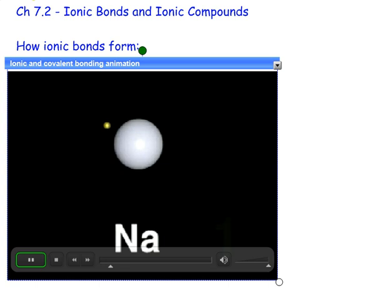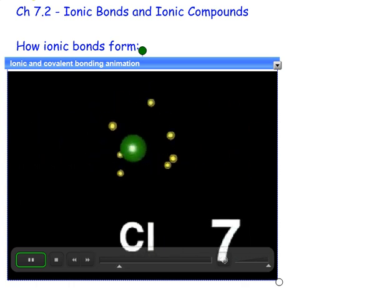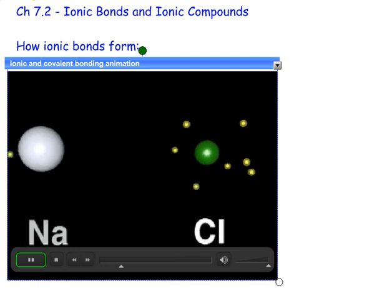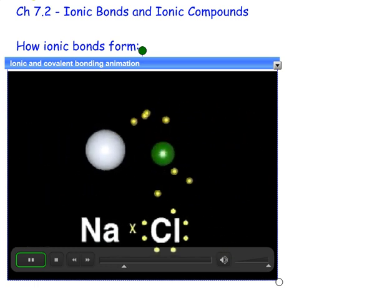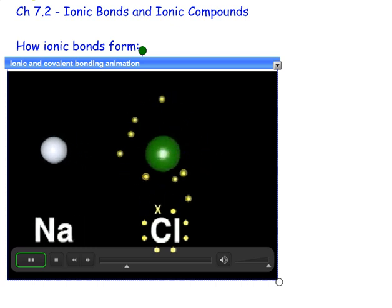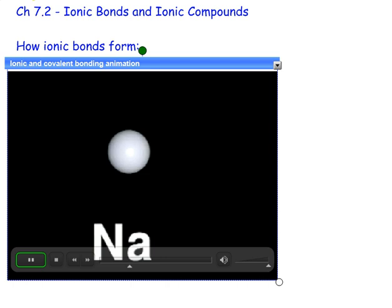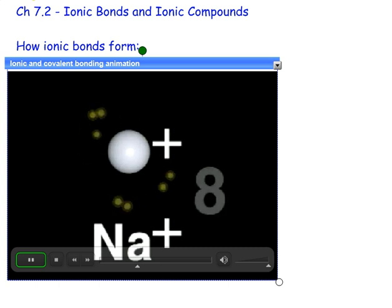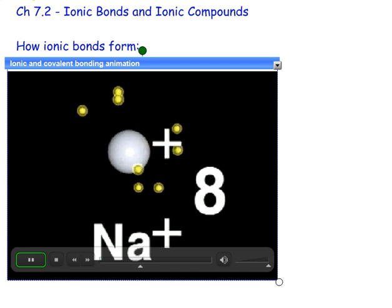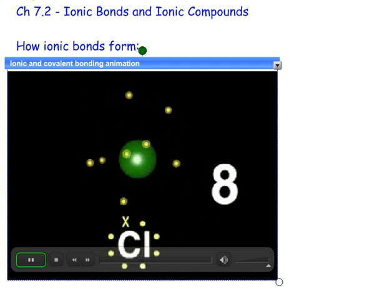A sodium atom has one valence electron, with a stable energy level below containing eight electrons. A chlorine atom has seven valence electrons. If the atoms collide with sufficient energy, the chlorine atom will remove the electron from the sodium. The sodium atom loses its only valence electron and becomes a positively charged sodium ion. The energy level below now provides sodium with its stable octet. The extra electron completes a stable octet for chlorine, which becomes a negatively charged chloride ion.